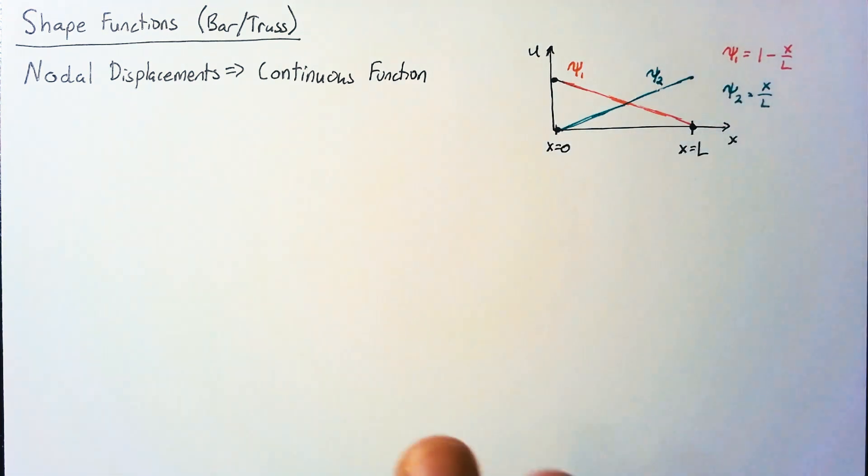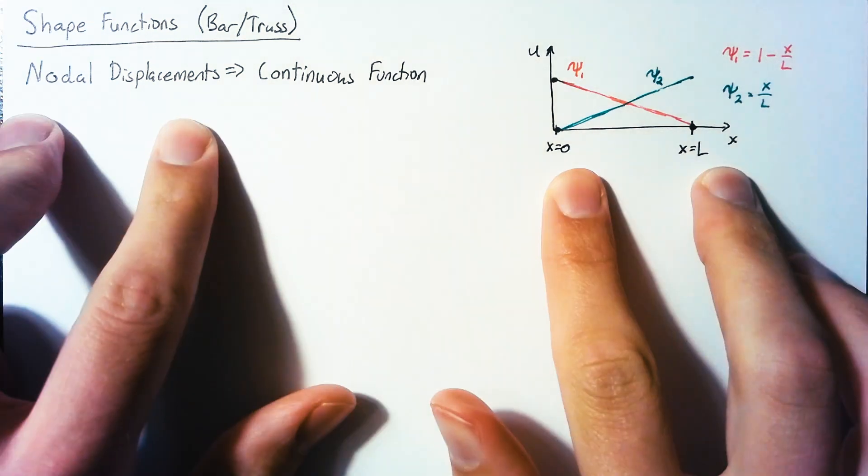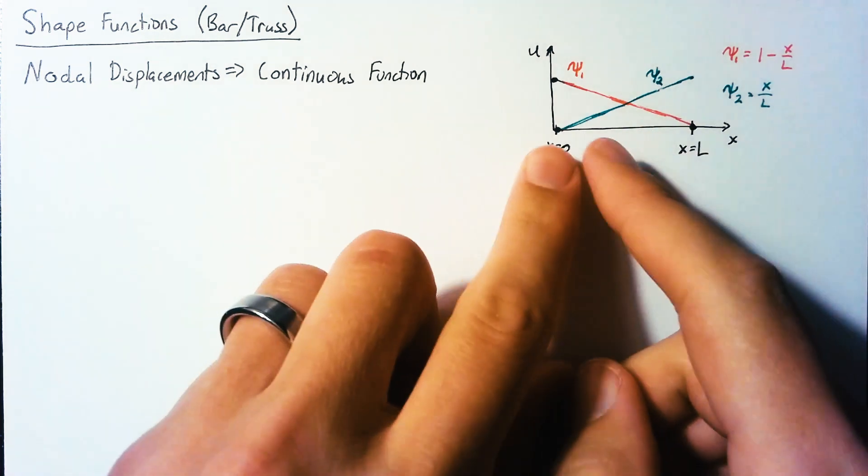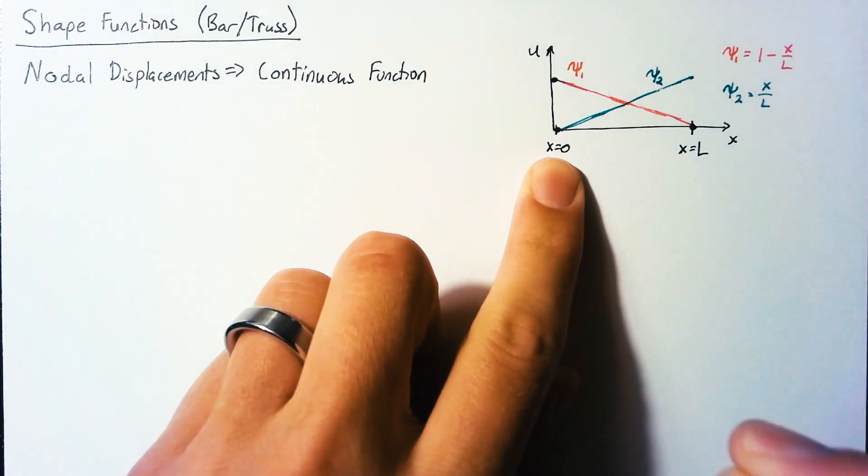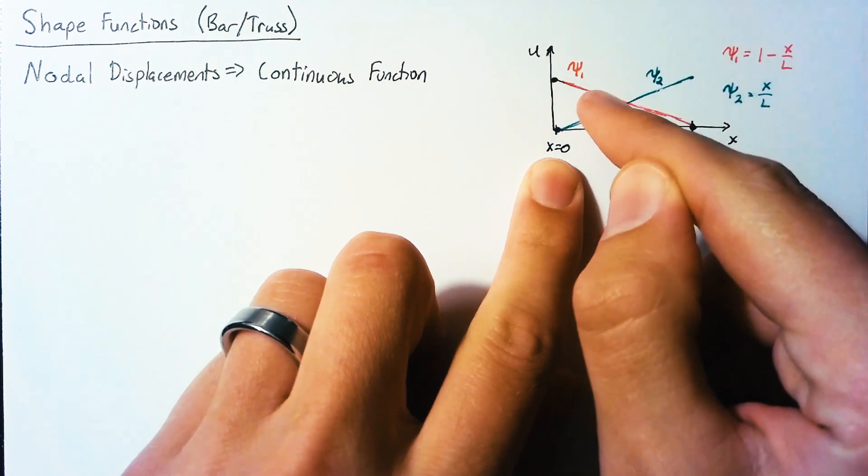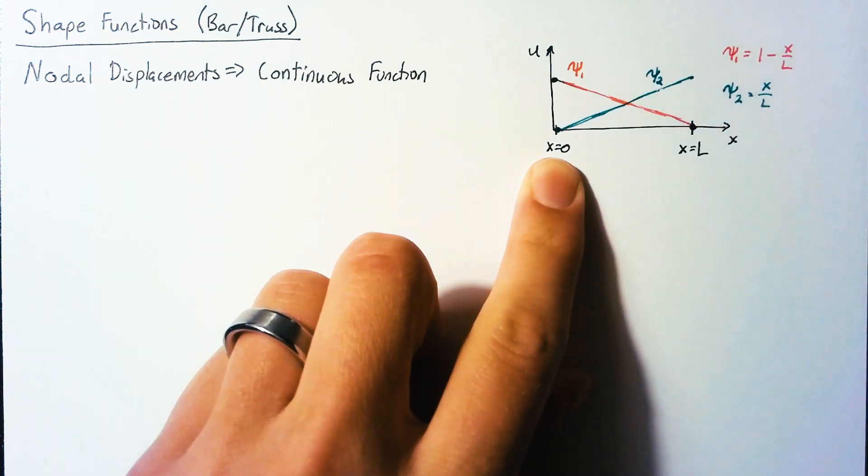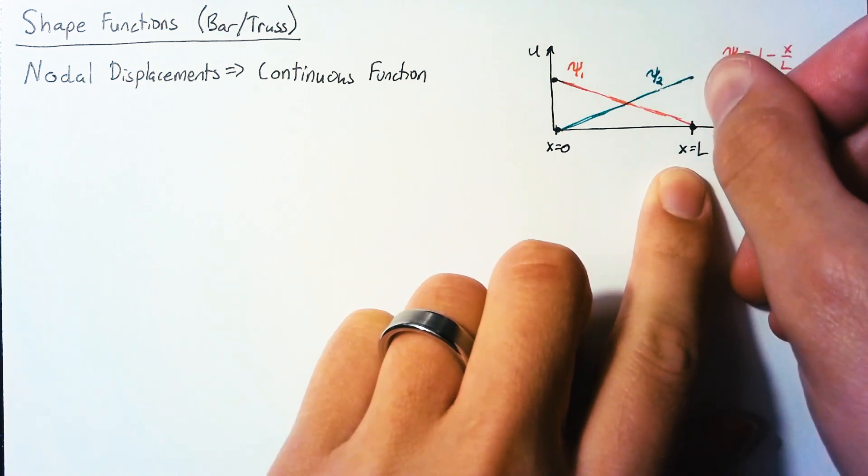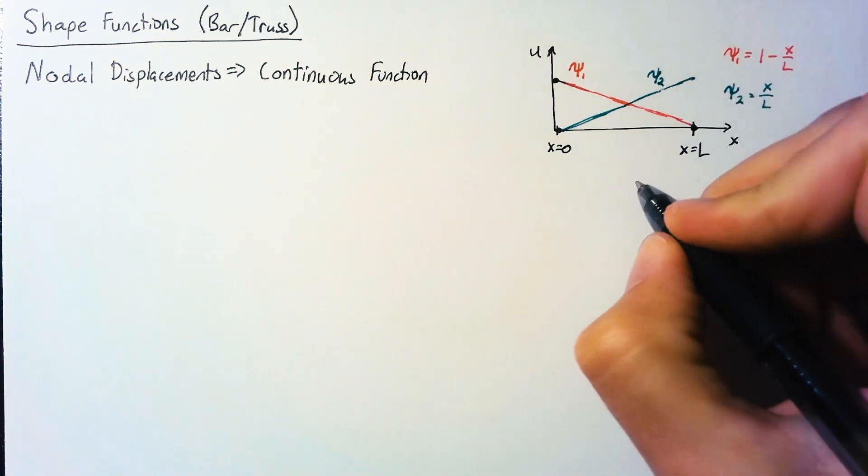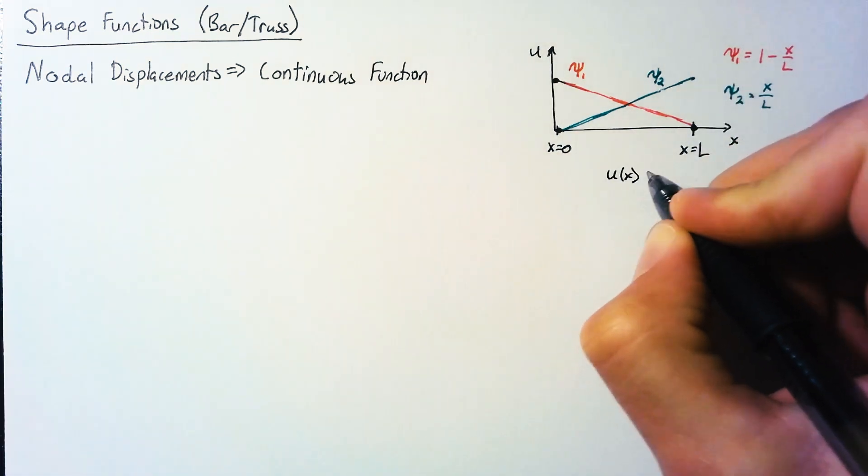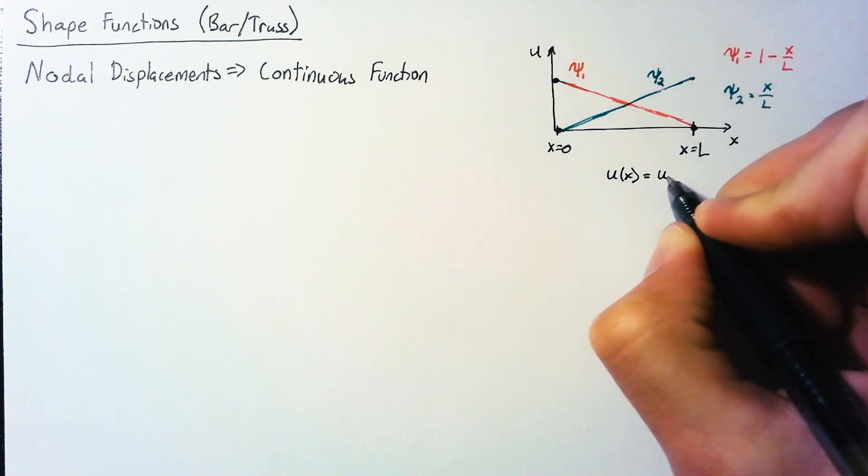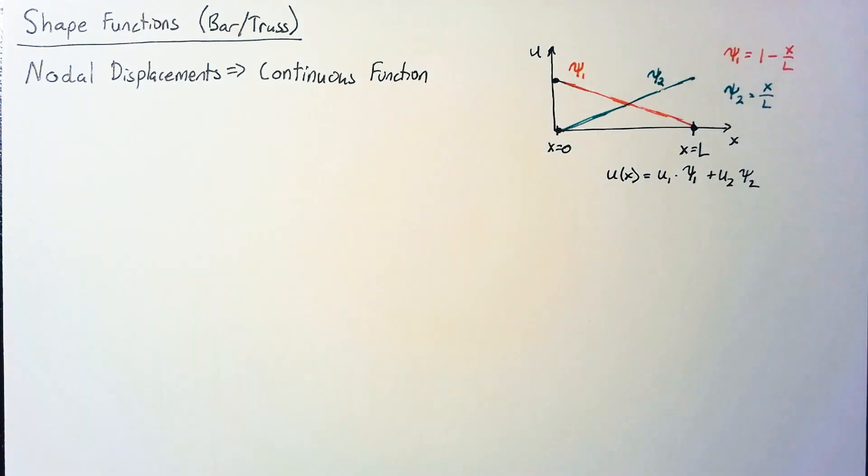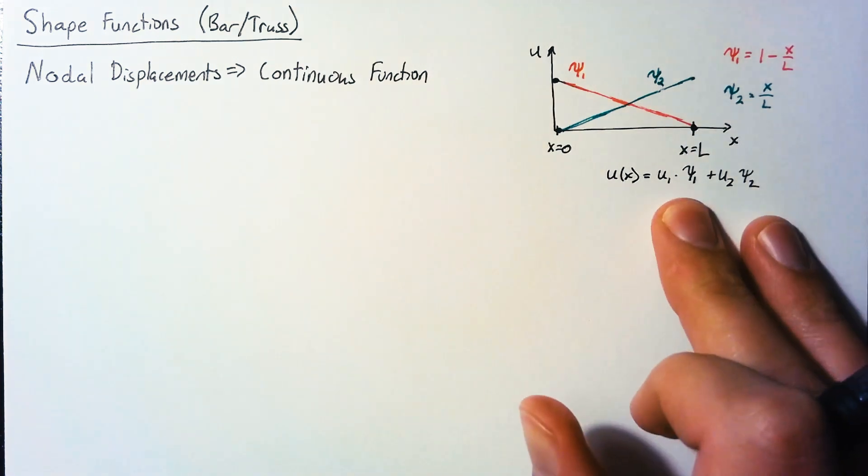Setting up this way makes our life really easy once we get our nodal displacements. If we want to find the displacement at any point, we can just take the actual displacement at x equals 0 and multiply it by our psi 1 shape function, and add that to our displacement at l multiplied by psi 2. So u of x is simply equal to u1 multiplied by psi 1 plus u2 multiplied by psi 2.